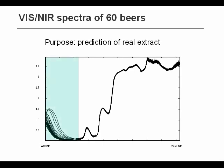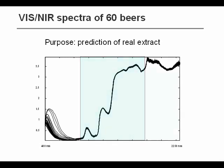We can see on the spectra that we have different areas. For example, we have the visible area here, and there's a lot of variation in that area. We have an area here in the near-infrared region, which does not seem to vary a lot, but which actually does contain a lot of relevant information. And then we also have an area where you can see that there's a lot of noise.